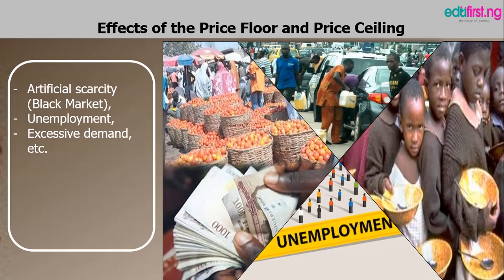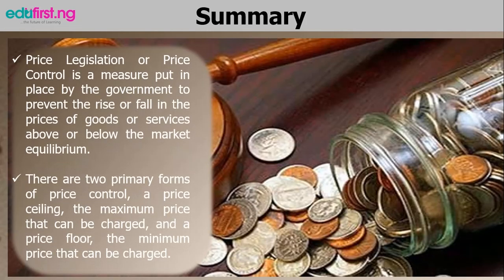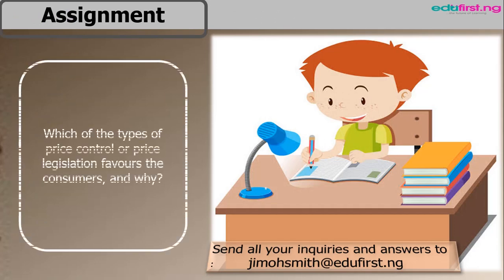In summary, price legislation or price control is a measure put in place by the government to prevent the rise or fall in prices of goods and services above or below the market equilibrium price. There are two primary forms of price control: a price ceiling, which is the maximum price that can be charged, and a price floor, which is the minimum price that can be charged. Here is an assignment for you: which of the types of price control favors the consumers, and why?